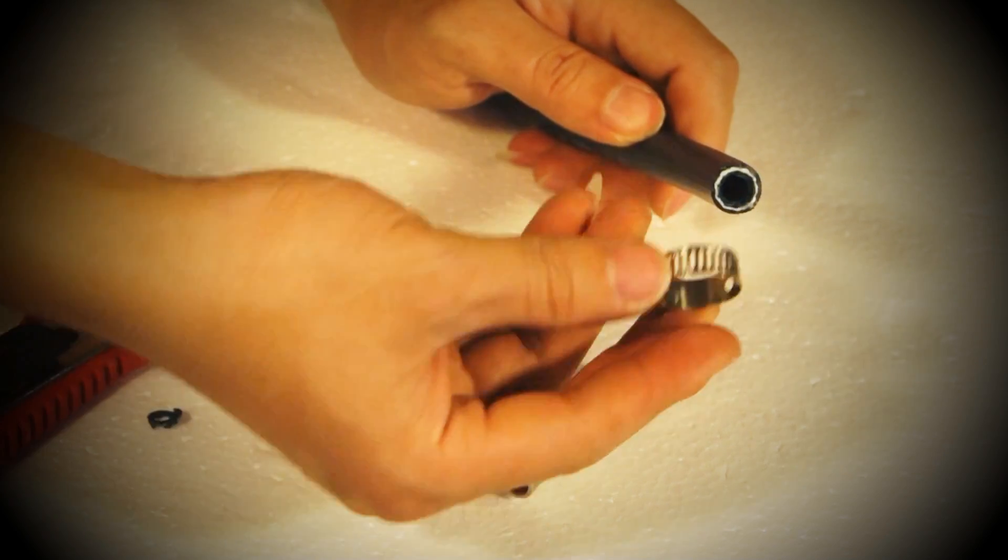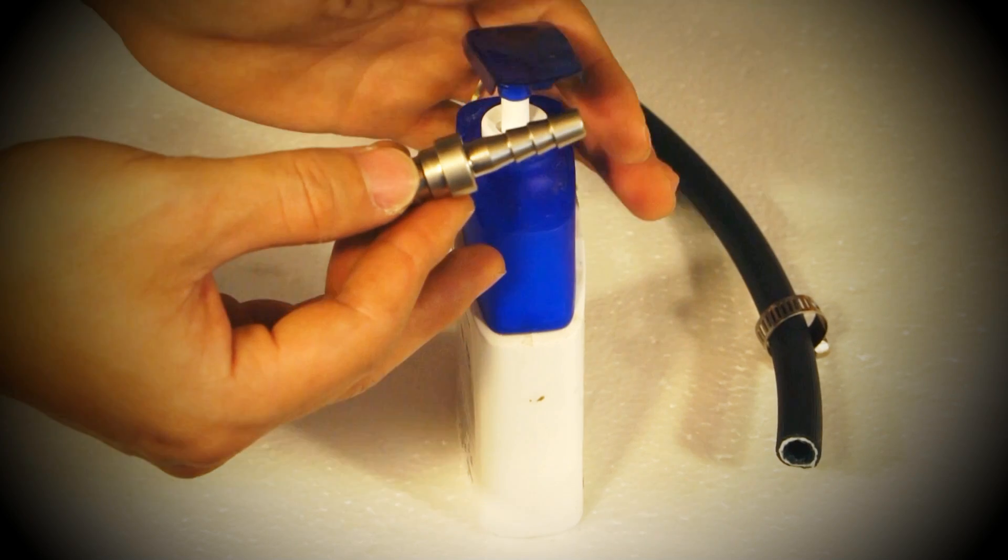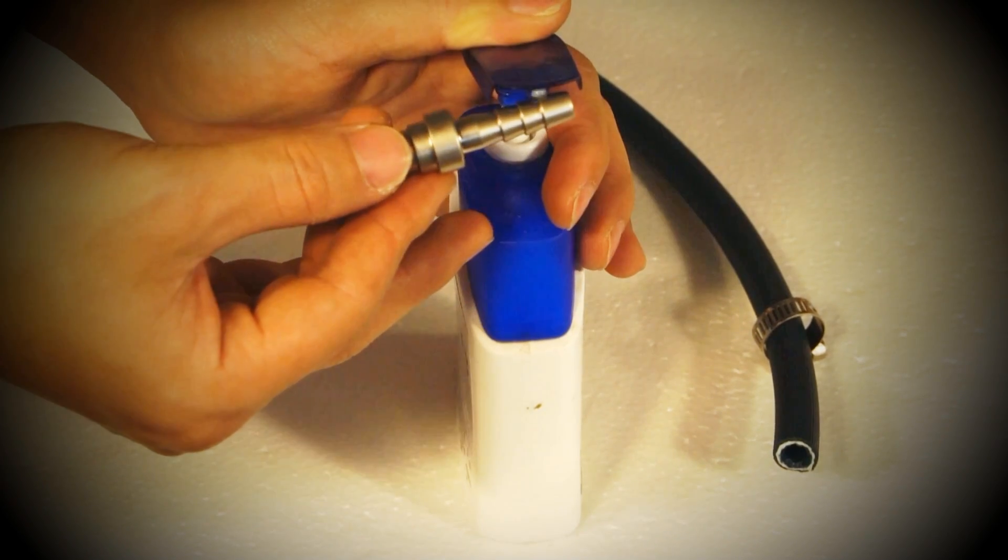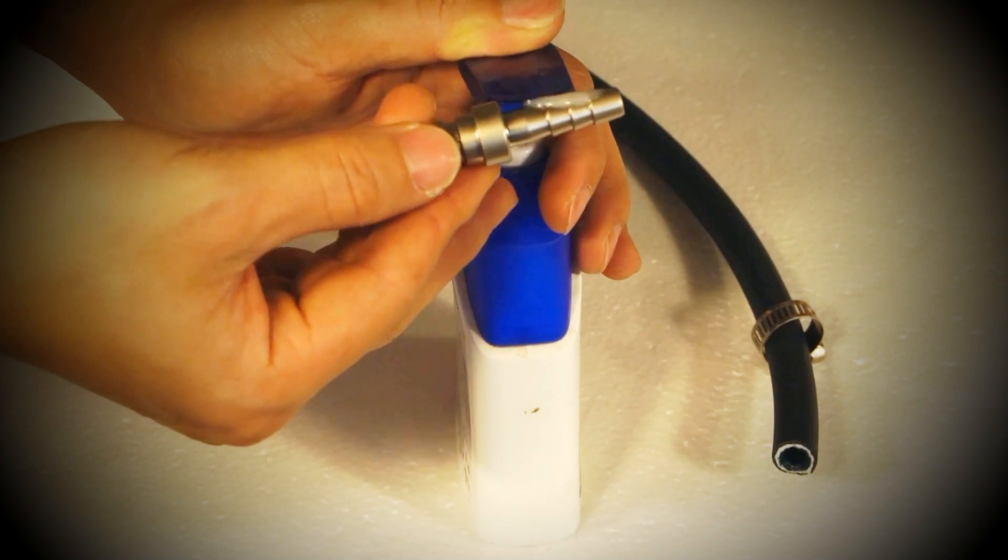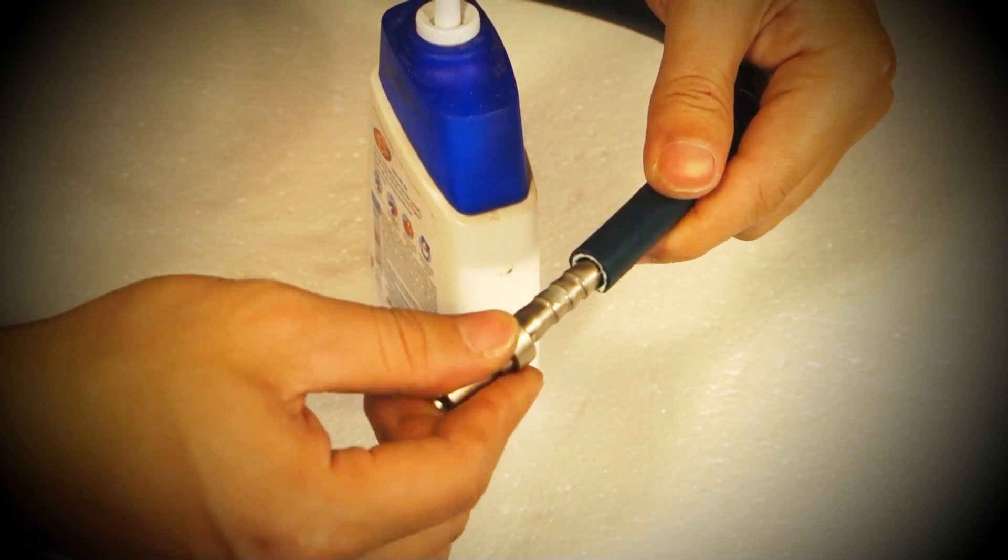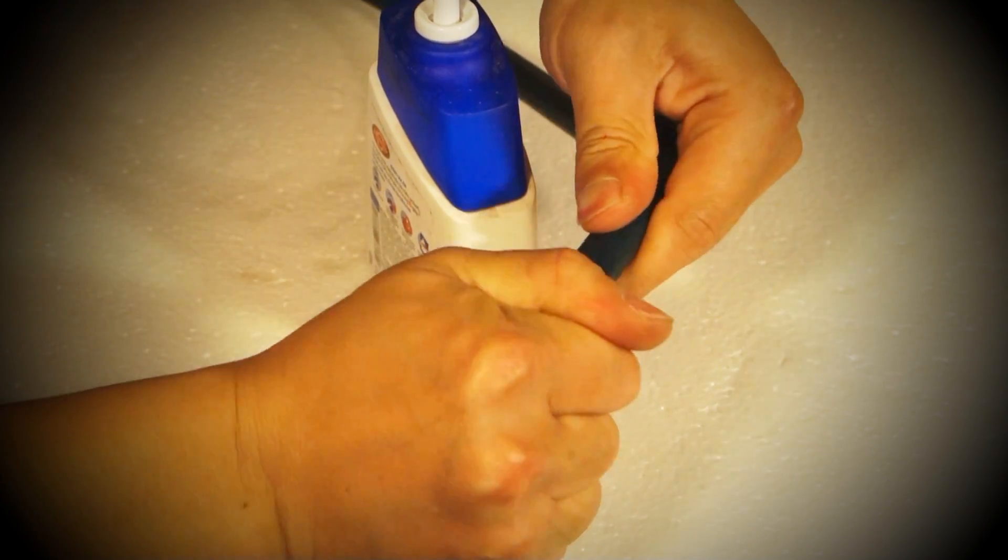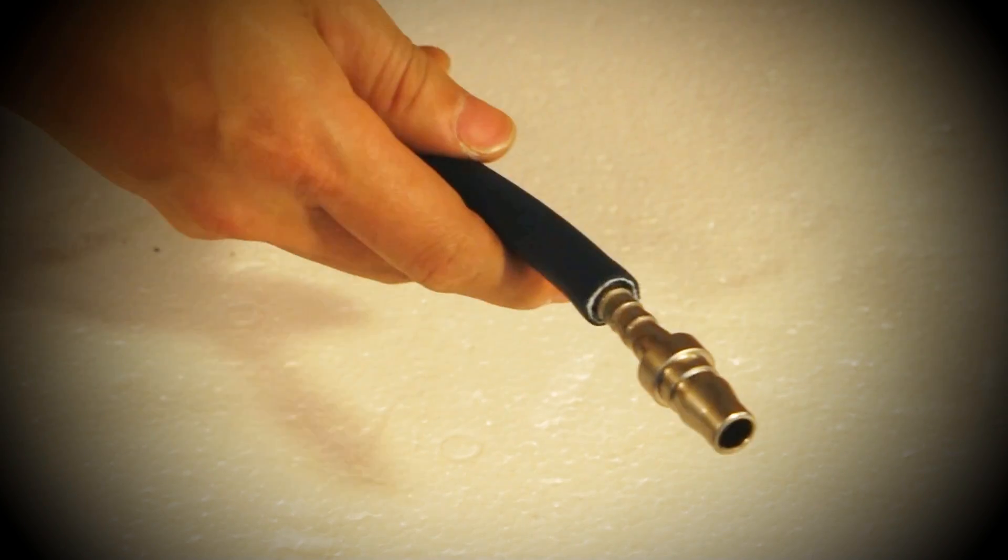Once the tube is ready, slide the ring clamp onto the hose. To make insertion of the connector easier, you can apply a small amount of hand soap to the connector. This will act as a lubricant. Now insert the connector into the hose. It will require some force.